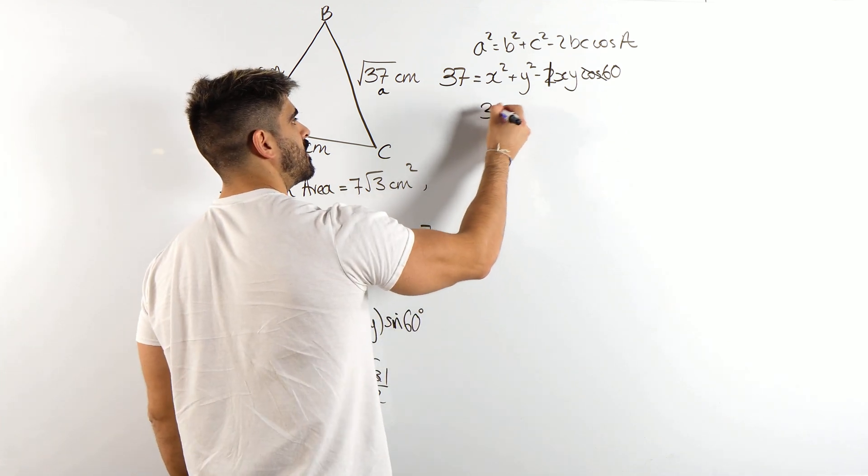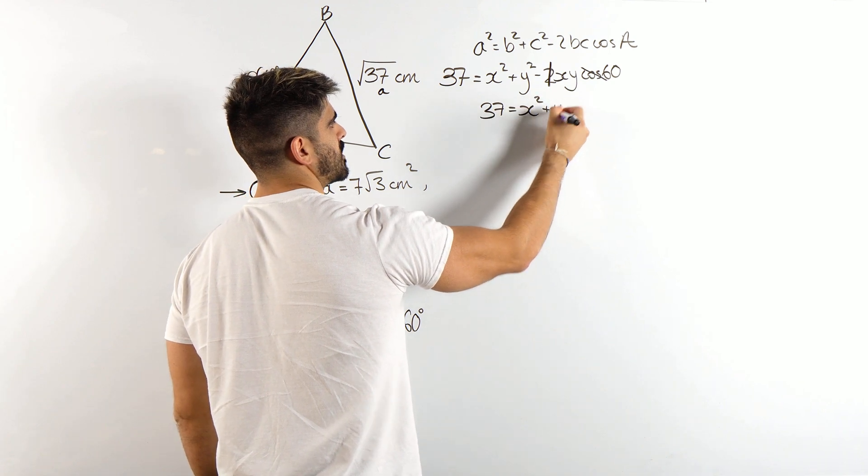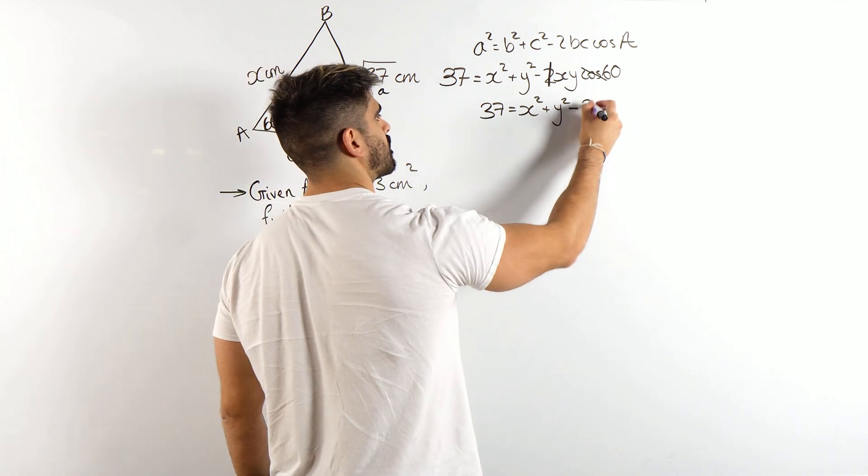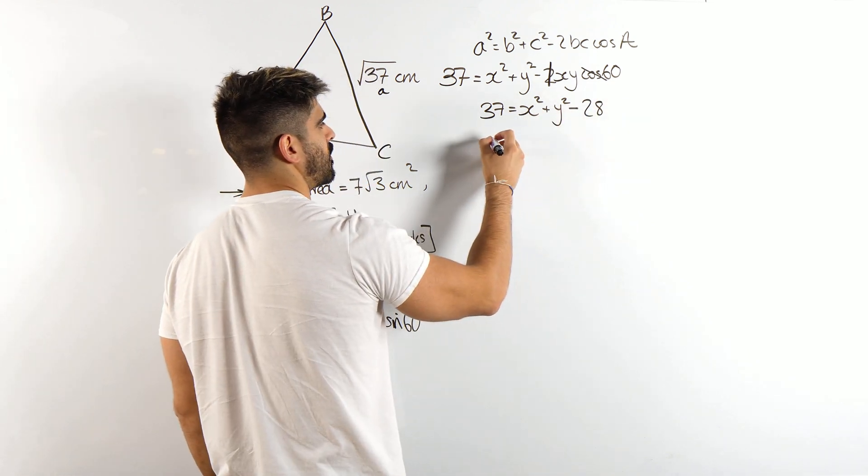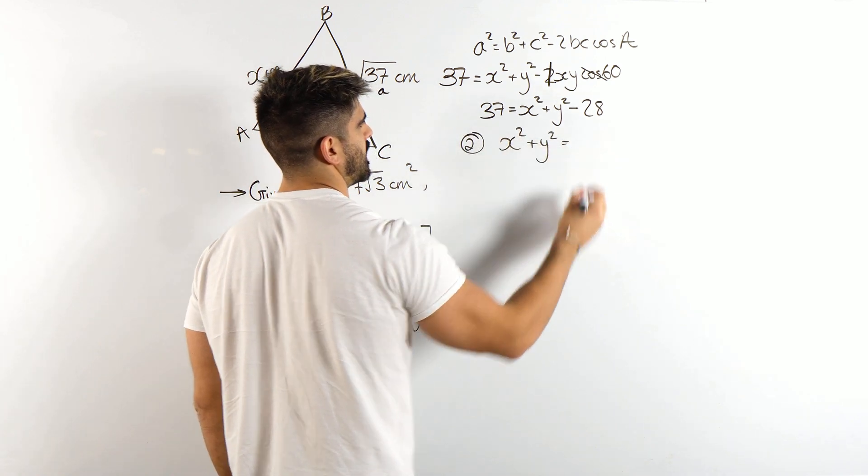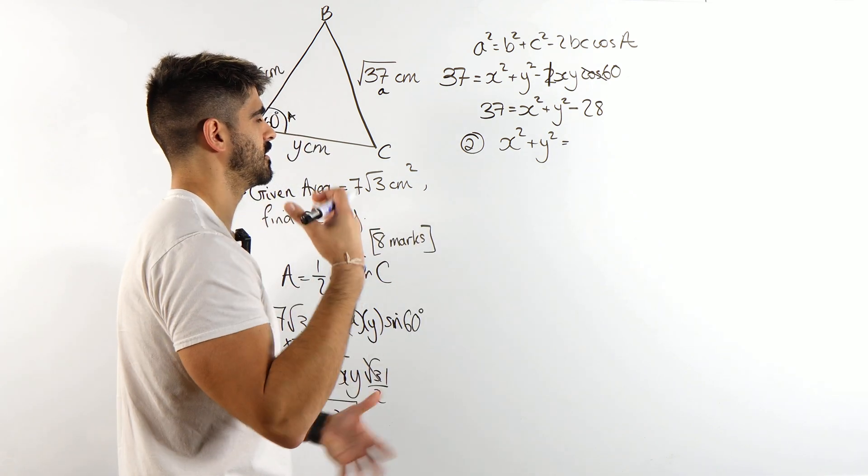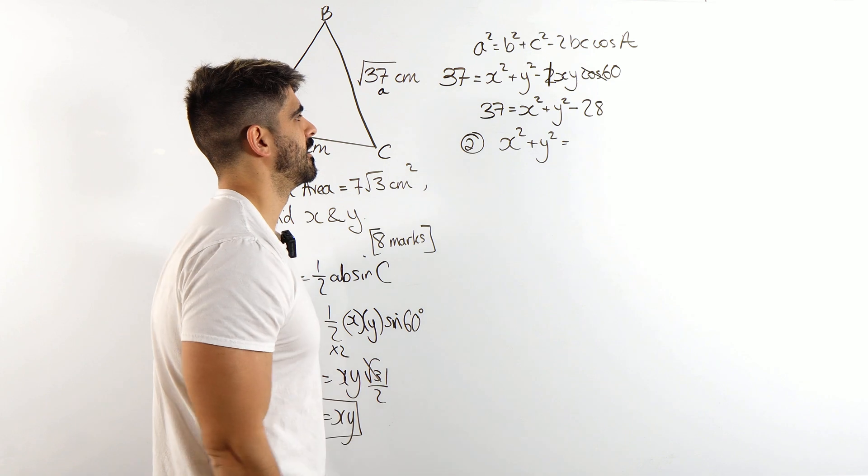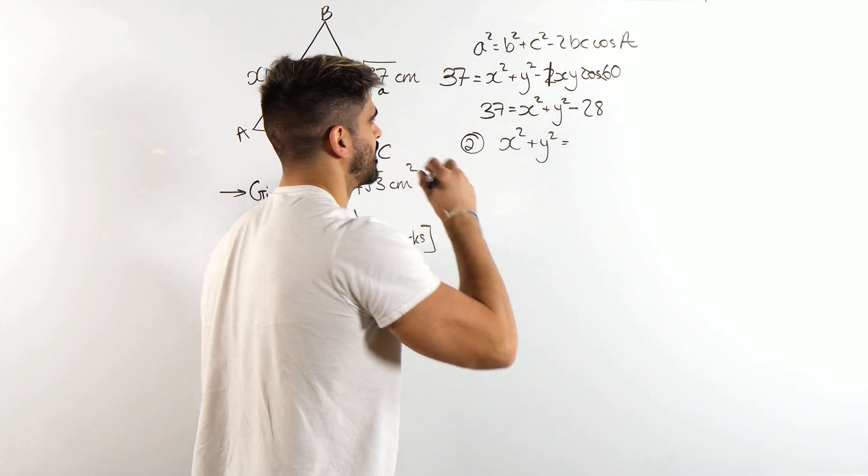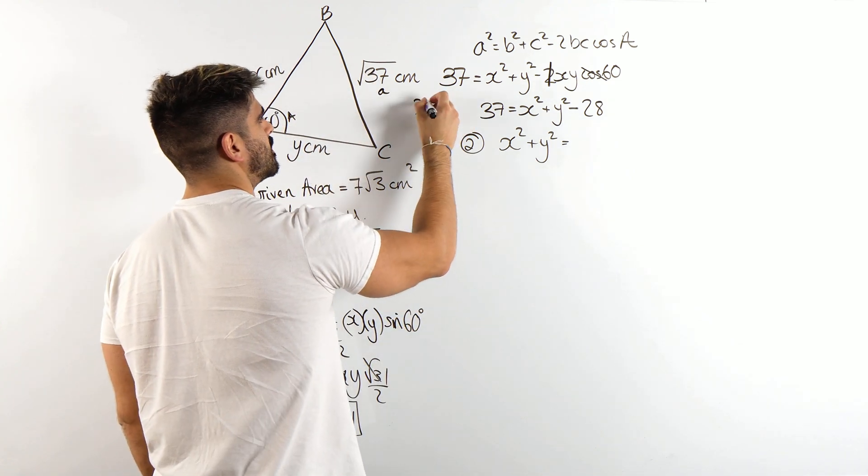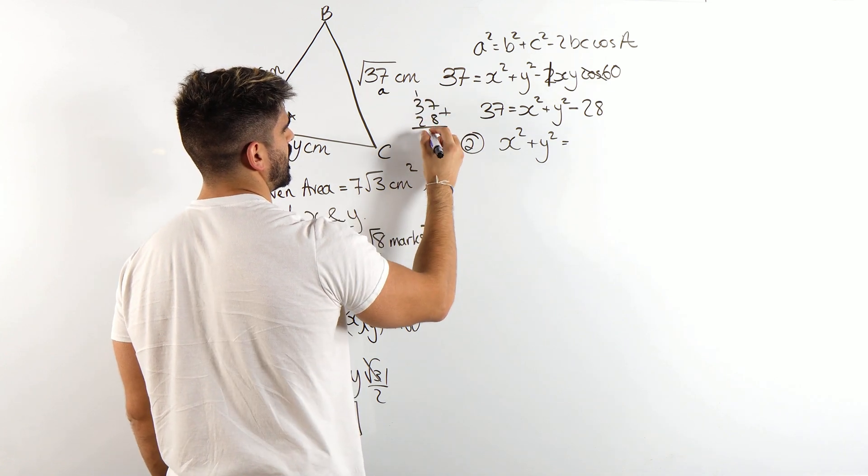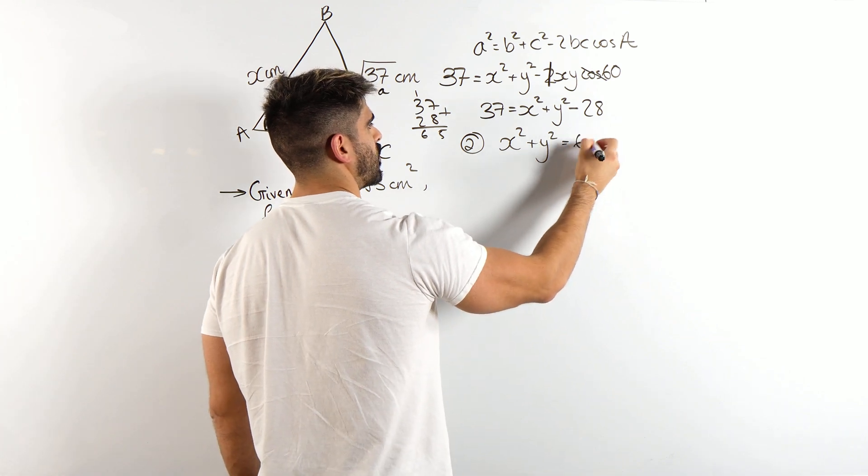I have 37 is x squared plus y squared minus 28. Moving to the other side. So we're left with our second equation, is x squared plus y squared is 65. I'm not risking it. That's 15. Yeah, 65. Cool. Sweating.